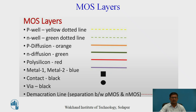The color coding used for different mask layers: for the P-well, a yellow dotted line is used; for N-well, a green dotted line. For P-diffusion used in PMOS, blue or orange color is used; N-diffusion is indicated by green color. Polysilicon, used for the gate, is orange or red. For metals (metal 1, metal 2), blue color is used; for contacts, black color; for wires, black color. A demarcation line shown by a dotted line separates the PMOS circuit from the NMOS circuit.